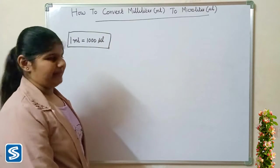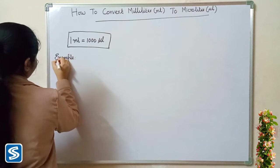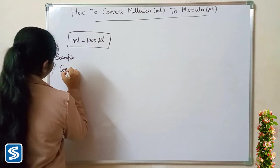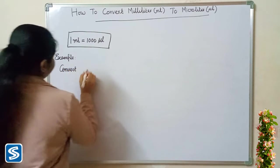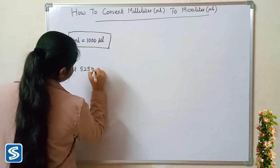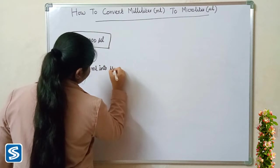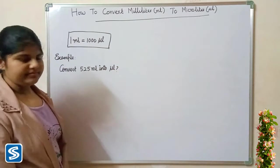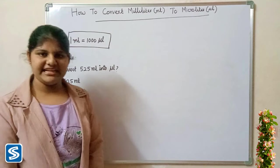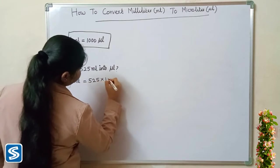Now we will take some examples. For example, convert five hundred and twenty five milliliters into microliters.